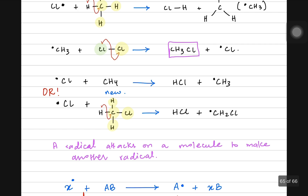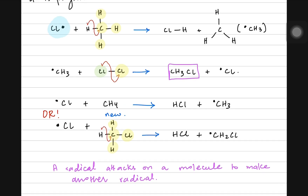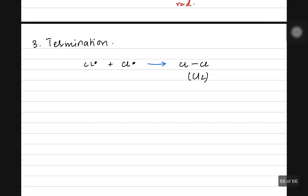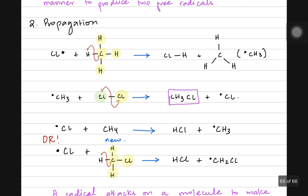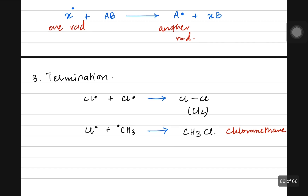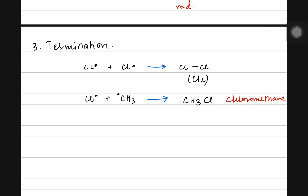Another possibility is that a chlorine radical collides with a methyl radical. Both were unstable, but they become stable by combining to form CH3Cl — chloromethane. It's also possible that one methyl radical combines with another methyl radical in the same container, since there are an enormous number of molecules present.